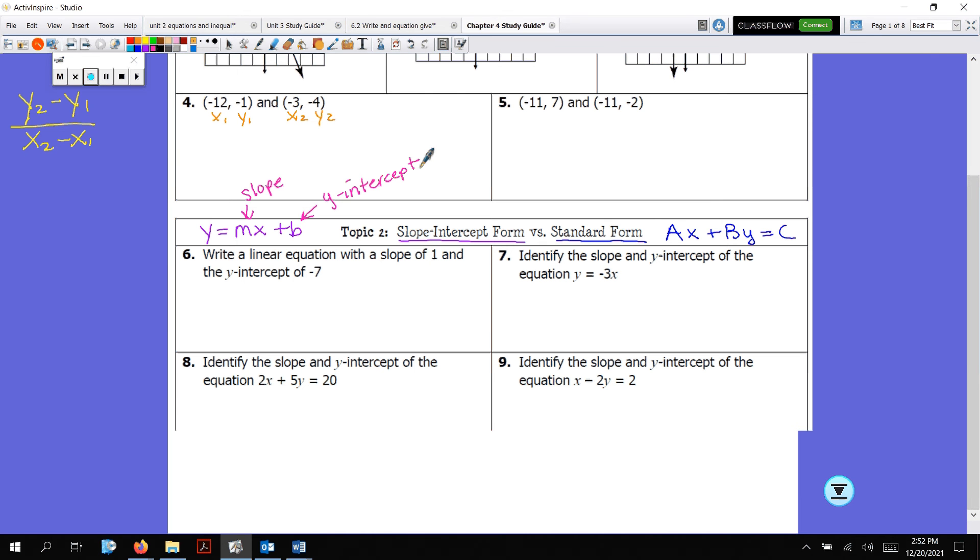Once you have the slope and the y-intercept, you're good. Number six is so easy. They literally give you the information. You just need to plug those numbers into this equation here. For number eight and nine, you need to convert. Both of these equations are in standard form. You need to solve for y. So in number eight, I'm going to subtract 2x from both sides. The biggest mistake I see here is people forget to write the x. But 20 and 2x are not like terms. So bring down your 5y, I'm going to drop in my negative 2x, and I'm going to move this positive 20 all the way to the end. I still need to solve for y, so I divide by 5. Everybody gets divided, so y equals negative 2/5 x plus 4.